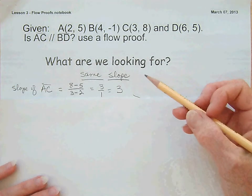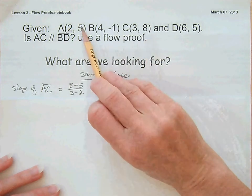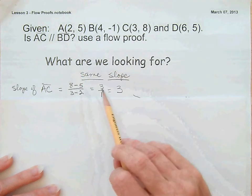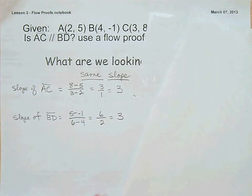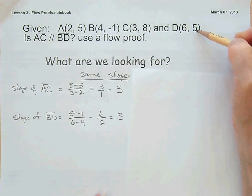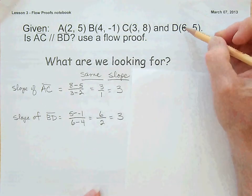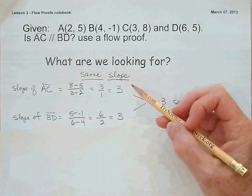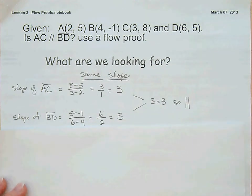The slope of AC is the difference in the y's, so 8 minus 5 over the x is 3 minus 2. You get 3 over 1, that equals 3. The slope of BD is 5 minus negative 1, that's 5 plus 1, over 6 minus 4. So 6 over 2 is 3. Since 3 equals 3, they have the same slope, so they are parallel.